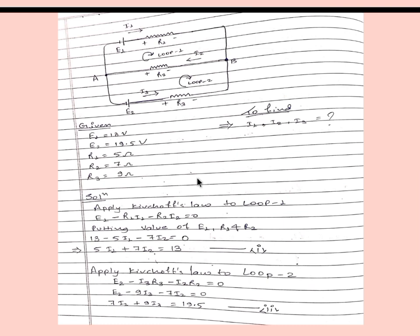Here we apply Kirchhoff's Voltage Law. Applying KVL to loop 1, we get: E1 minus R1 times I1 minus R2 times I2 is equal to 0. Putting in the values of E1, R1, and R2, we get equation number 1. Applying Kirchhoff's law to loop 2, we can write: E2 minus I3·R3 minus I2·R2 is equal to 0.